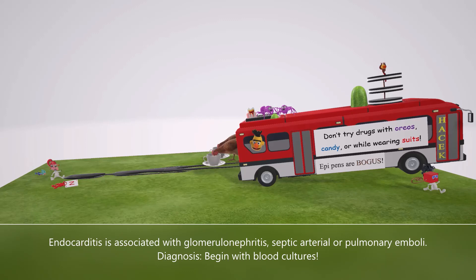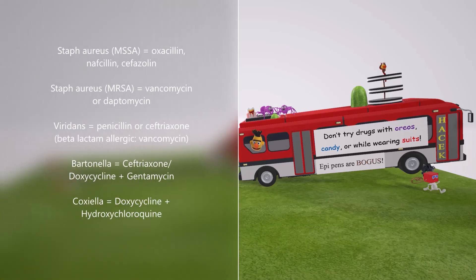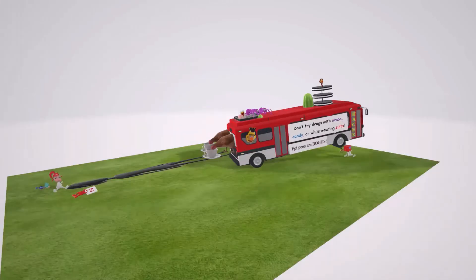For Staph aureus treatment, it depends on whether it's methicillin-sensitive (MSSA) or methicillin-resistant (MRSA). For MSSA: oxacillin, nafcillin, or cefazolin. For MRSA: vancomycin or daptomycin. For viridans strep: penicillin or ceftriaxone for a month, unless the patient is beta-lactam allergic — then give vancomycin. For Bartonella: ceftriaxone or doxycycline plus gentamicin. For Coxiella: doxycycline and hydroxychloroquine (an anti-malarial).